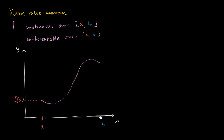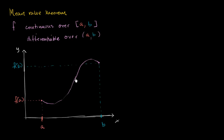This point right over here, the x-value is b and the y-value is f of b. So all the mean value theorem tells us is: if we take the average rate of change over the interval, then at some point the instantaneous rate of change — at least at some point in this open interval — is going to be the same as the average rate of change.